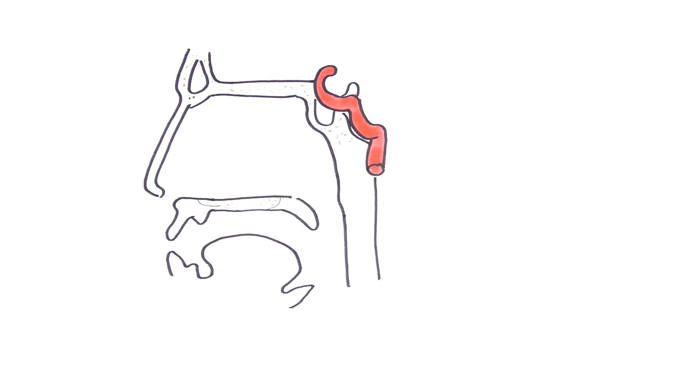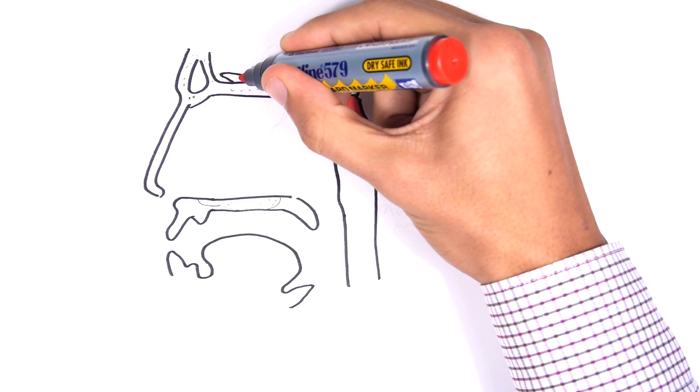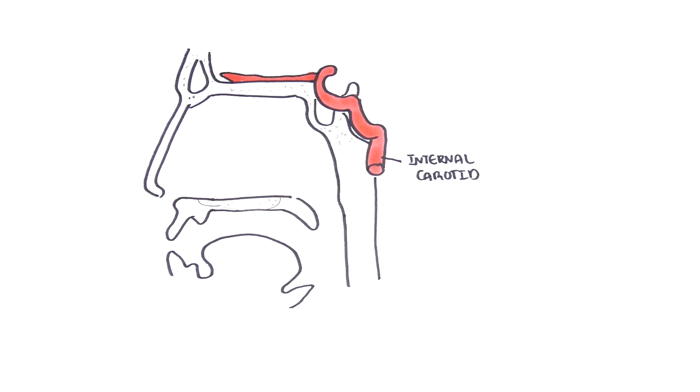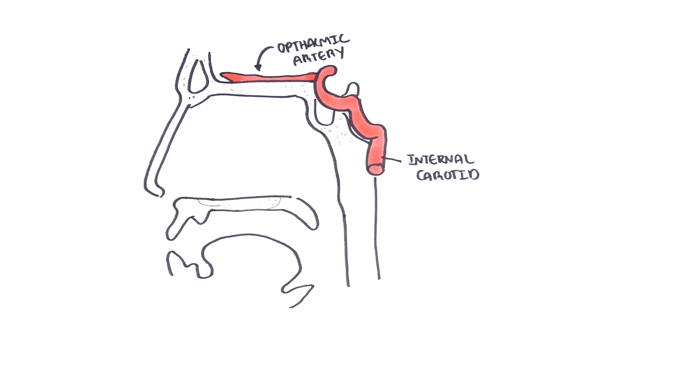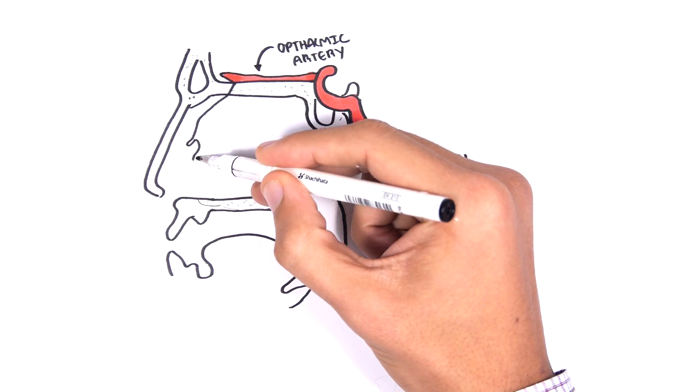The internal carotid is a branch of the common carotid artery. The internal carotid artery does not have any branches until it reaches the skull, where it will give off the ophthalmic artery. The ophthalmic artery supplies the eyes mainly, but also has several branches coming off it.